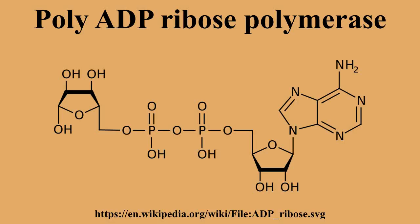Tankyrases are PARPs comprising ankyrin repeats, a polymerization domain, and a PARP catalytic domain, also known as PARP-5A and PARP-5B. They were named for their interaction with the telomere-associated TRF1 proteins and ankyrin repeats, and may allow removal of telomerase-inhibiting complexes from chromosome ends to allow telomere maintenance. Through the SAM domain and ankyrin repeats, they can oligomerize and interact with many proteins such as TRF1, TAB182, GRB14, IRAP, NuMA, EBNA1, and MCL1.